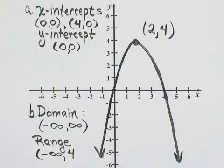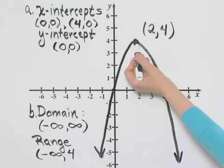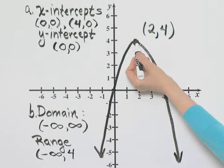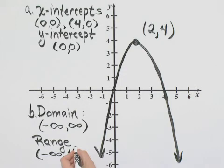Do I place a parenthesis or bracket about 4? This parabola actually attains the y value of 4. So, I place a bracket. There we go. X and y intercepts, domain, range.